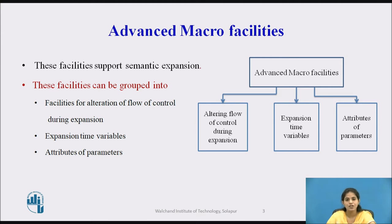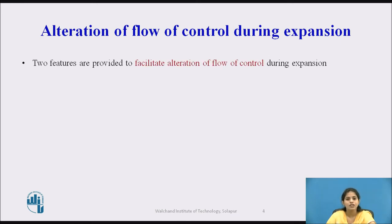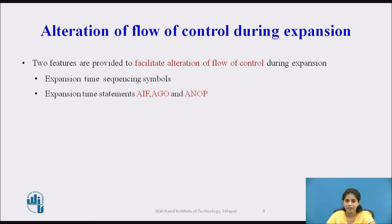In this session we see the first two advanced macro facilities. The first one is the alteration of the flow of control during the expansion. It provides two features: first is the expansion time sequencing symbol, and the second is the expansion time statements AIF, AGO, and ANOP.